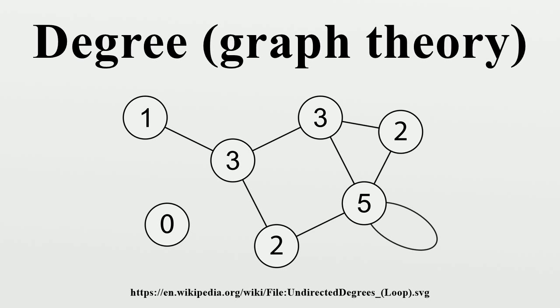In the graph on the right, the maximum degree is 5 and the minimum degree is 0. In a regular graph, all degrees are the same, and so we can speak of the degree of the graph.